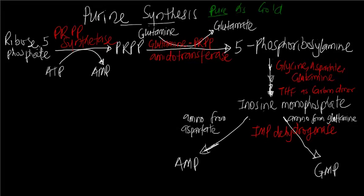Starting here, we are starting with ribose 5-phosphate. From ribose 5-phosphate, by the help of PRPP synthetase, we want to add ATP to it and form PRPP. Any time you see synthetase, you can know the product from the name of the enzyme. One of the pathways that can donate ribose 5-phosphate for this pathway is the HMP shunt, and we shall talk about it later.